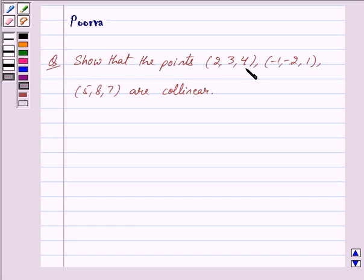Show that the points (2, 3, 4), (-1, -2, 1), and (5, 8, 7) are collinear.